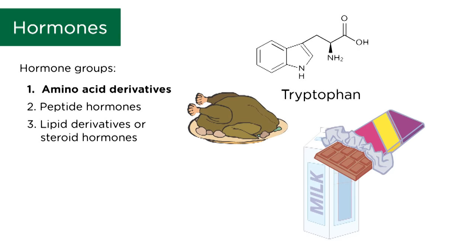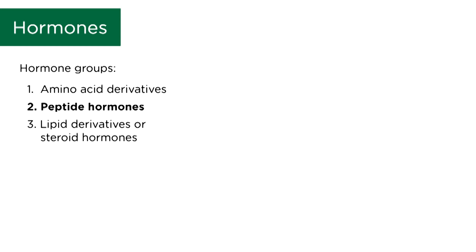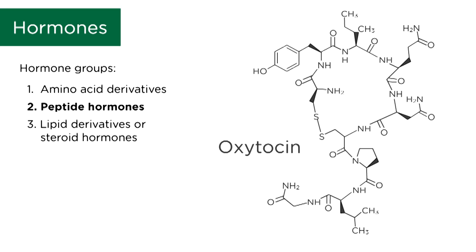Peptide hormones are made up of a bunch of amino acids. Some examples would be thyroid stimulating hormone, oxytocin, or prolactin.